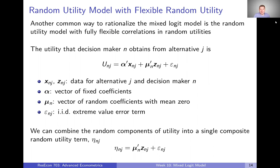We're going to write down a random utility model with fully flexible correlations. The utility that decision maker n obtains from alternative j is given by this formula here. We're going to say that there's some vector of fixed coefficients alpha — just like the coefficients in the logit model, common across the whole population — times some data. Plus, we're going to have this vector mu sub n, which is a vector of random coefficients with mean zero, varying throughout the population but all centered at zero. And then finally, we add an epsilon IID extreme value error term.